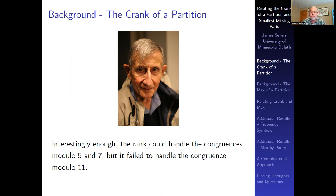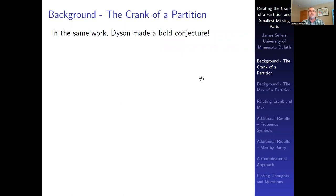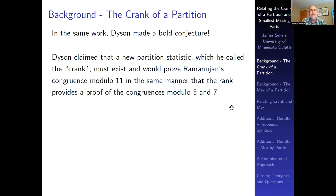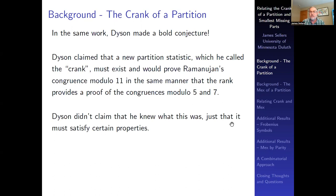Dyson's rank could handle Ramanujan's congruences mod 5 and 7, but it fails to prove the congruence mod 11. In the same paper, Dyson made a bold conjecture: he claimed there must be another partition statistic, which he called the crank, that would prove Ramanujan's congruence mod 11 in the same manner. Dyson showed a number of properties that needed to be satisfied by this elusive crank.